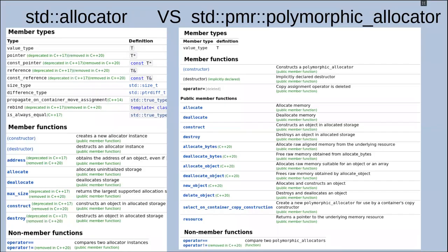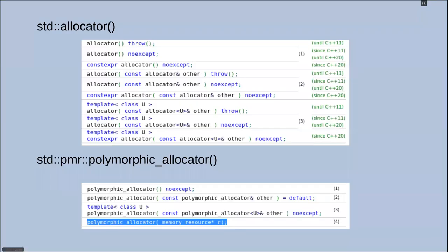If we compare std::allocator and polymorphic allocator, first of all, a lot of items in the allocator were marked as deprecated and will be deleted in C++17 or C++20. They look similar. Both can allocate and deallocate memory. But what is different?